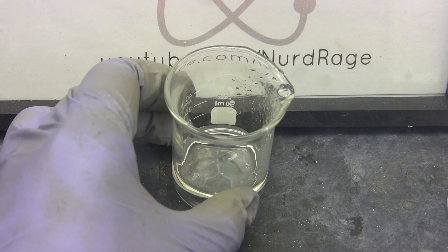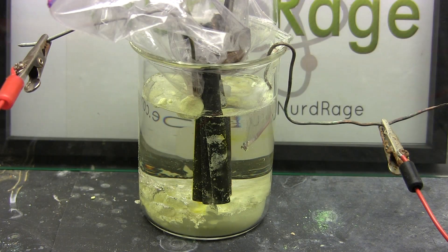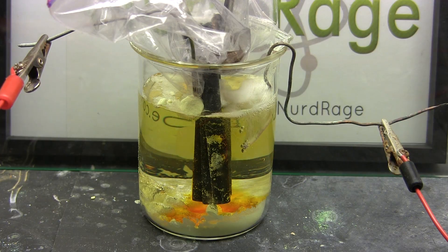Greetings foul nerds. In this video we're going to make sulfuric acid from sulfur and water using a new process I found that I'm calling the electrobromine process.